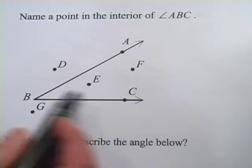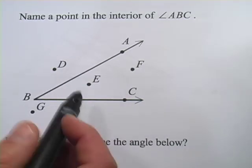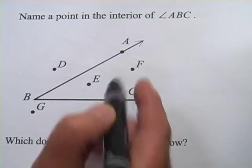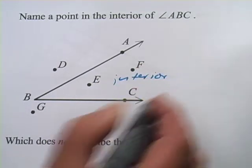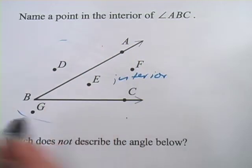An angle divides a space into two sections. There's what's inside it, that's the interior. And then there's all this stuff out here, which is the exterior of the angle.